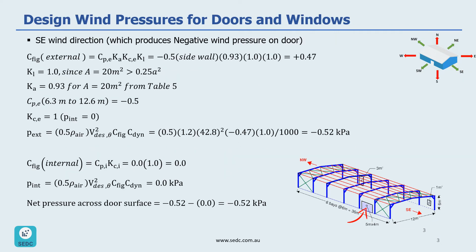Let's look at the second situation of wind loading on the door, which produces negative wind pressure. For this we need to look at southeast and northwest wind directions. Of these two, southeast has the higher design wind speed, so we are going to look at that direction.